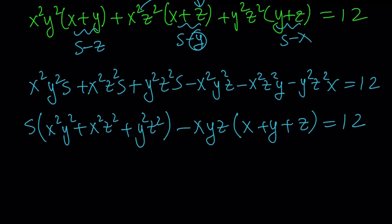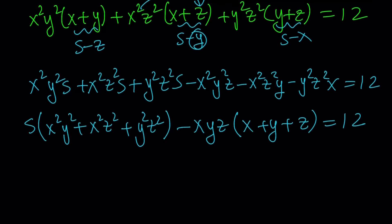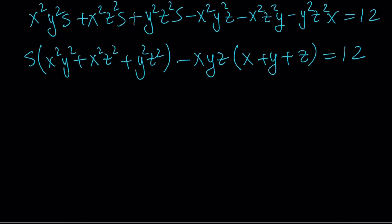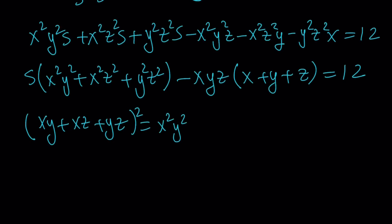But what about x squared y squared plus x squared z squared plus y squared z squared? I need to find an expression for that. To get this sum, I would need to square xy plus xz plus yz. When we square that, we get x squared y squared plus x squared z squared plus y squared z squared, but we also get 2xy·z terms: 2x squared yz plus 2y squared xz plus 2z squared xy.